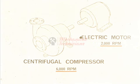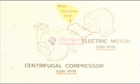Here's another example. An electric motor must be used to drive this centrifugal compressor. However, this particular motor does not turn fast enough to bring the compressor up to its normal operating speed. In this case, we would need to install a gear increaser between the two. The gear increaser would then increase the driving speed of the motor by three times, so it could be used to drive the compressor at 6,000 RPM.